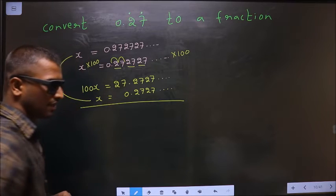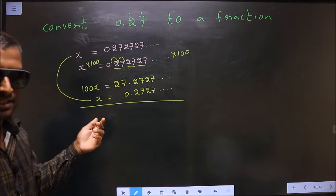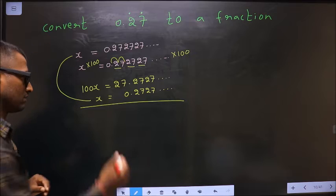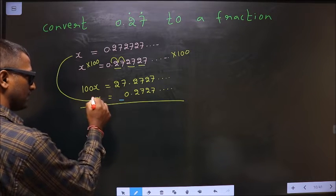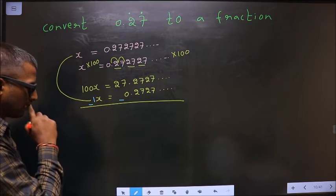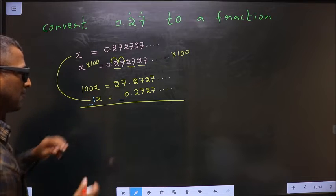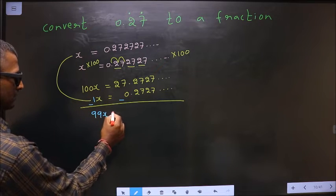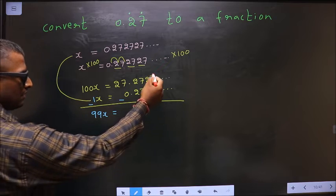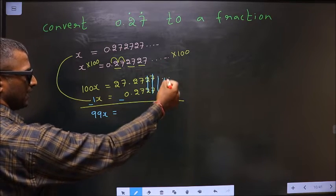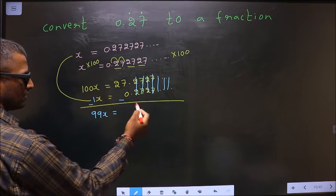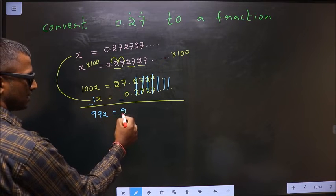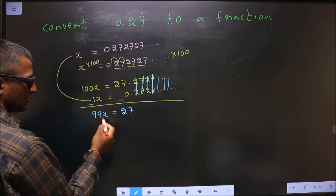Next step: subtract these two equations. No number in front means 1, so 100x minus 1x is 99x. On the right side, the 2727 repeating parts cancel each other out, leaving only 27 minus 0, which is 27.